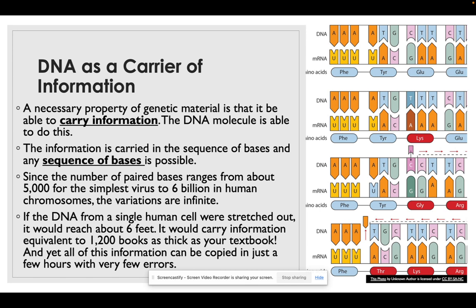As a carrier of information, it is a necessary property of genetic material to be able to carry genetic information. The DNA molecule definitely does that. The information is carried in the sequence of bases, and any sequence of those nucleic bases is possible. Since the number of paired bases ranges about 5,000 for the simplest virus to approximately 6 billion in human chromosomes, variations are infinite. If the DNA from a single human cell were stretched out, it would reach about six feet and carry information equivalent to 1,200 textbooks. Yet all of that information is copied in a few hours with few to no errors.